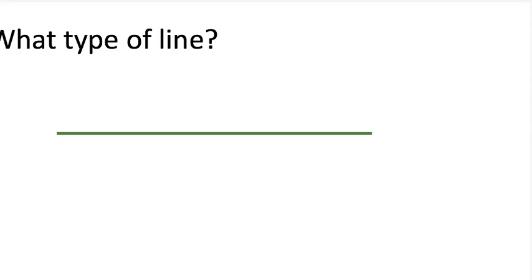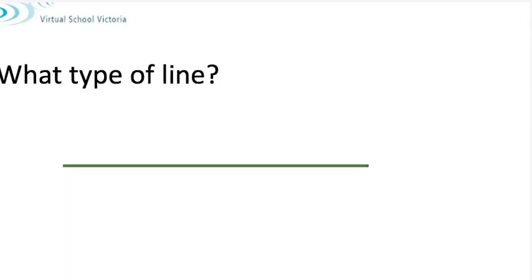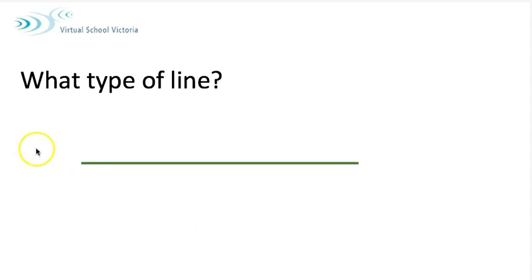What type of line would that be? Let's have a look at it. That is a horizontal line. It's in the same way that a horizon would be if you stood at the beach and looked over the sea. That's called the horizon. That's got a bit of a curve on it but that's how you remember horizontal.